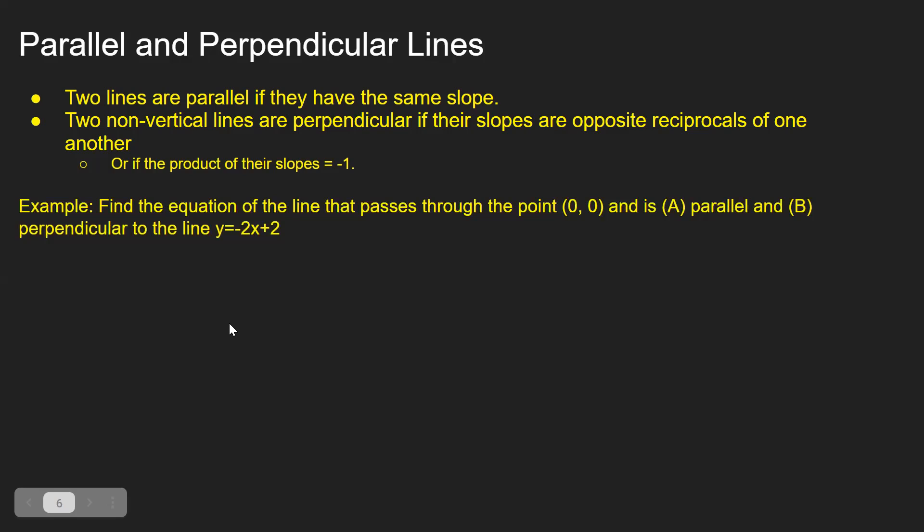For an example, find the equation of the line that passes through the point (0, 0) and is (A) parallel and (B) perpendicular to the line Y = -2X + 2. Take a second, pause the video, and try this problem.